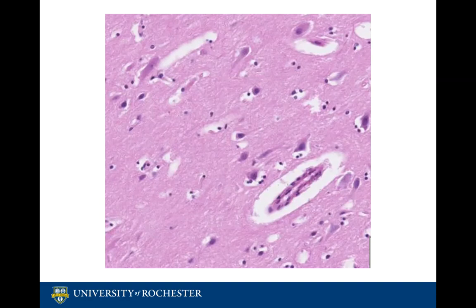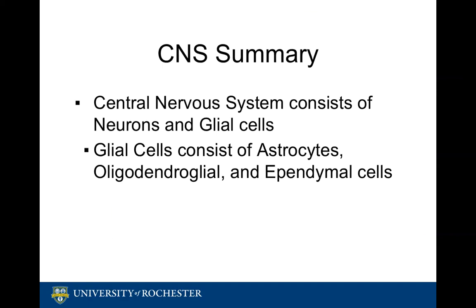The final cell type we will be looking at is the microglial cell. These cells are the resident members of the monocyte-macrophage system of the central nervous system. These cells, which have elongated nuclei with scant cytoplasm, are not typically well seen unless they have become activated.